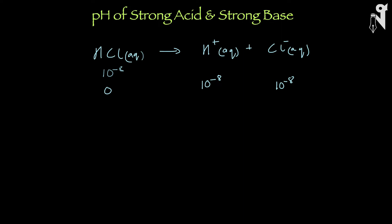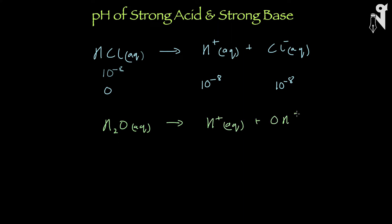The reason is because we cannot forget the other player which is always there — and particularly in this case it cannot be ignored — which is water itself. Your H₂O, written as 2H₂O, is itself going to give you H⁺ and OH⁻. H₂O itself produces H⁺ and OH⁻. As pure water, how much does it produce? It produces 10 to the power minus 7.